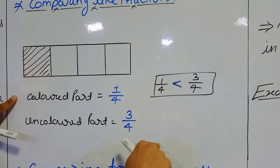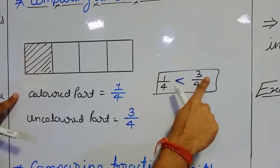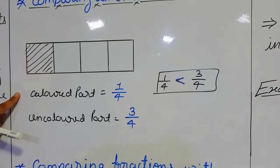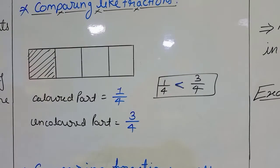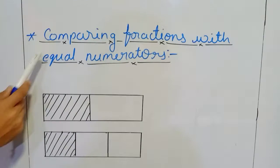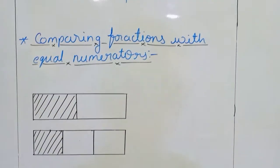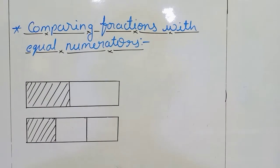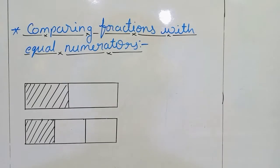So once again: if we have like fractions, meaning the denominator is the same, and we want to decide which one is greater, that depends on the numerator — whichever numerator is greater, that whole fraction is greater, as we can see in our diagram. Now, come to the second type of comparison: comparing fractions with equal numerators.